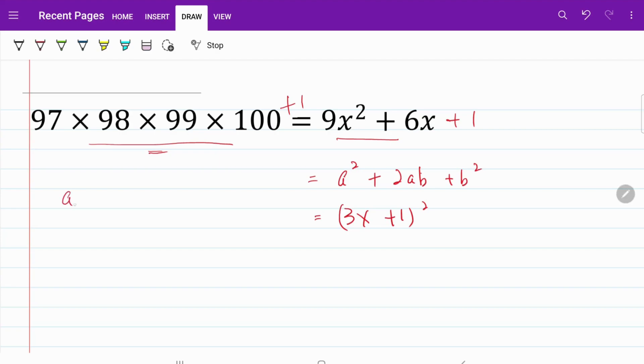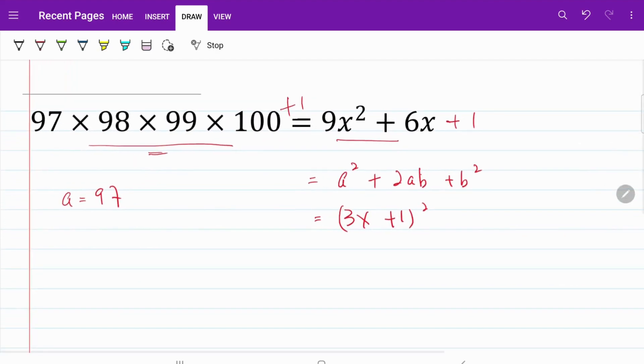I'm going to let a equal to 97 and express this series in terms of a. So, now what I have is a multiplied by a plus 1 multiplied by a plus 2 multiplied by a plus 3. Don't forget the plus 1 at the end. Let's put everything that we have so far. I have a multiplied by a plus 1, a plus 2, a plus 3 plus 1 is equal to 3x plus 1 bracket square.